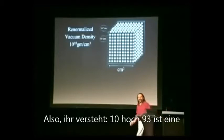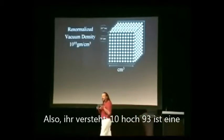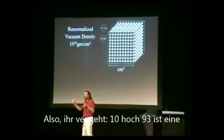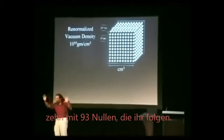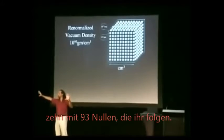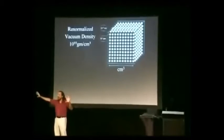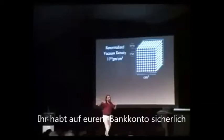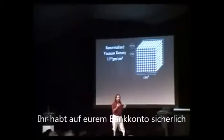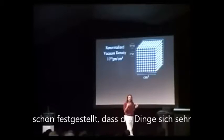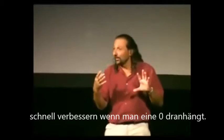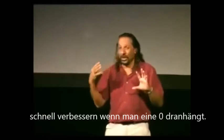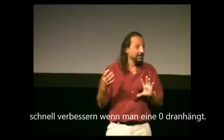Now, you've got to understand — 10 to the 93 is like a 10 with 92 zeros following it. You all notice in your bank account, when you add a zero, things improve very rapidly. You've got like 5 zeros and you add another one — things are good. Then you add another — even better. How dense is that? Let me give you an example.